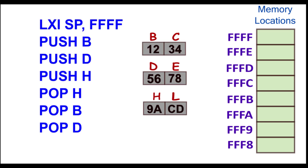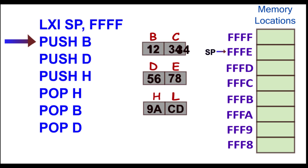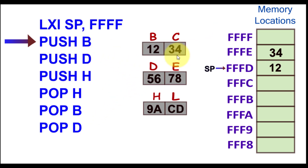With the first instruction LXI SP, the stack pointer gets initialized to FFFF. I'm showing this with an arrow marked SP. This is the first instruction which initializes the stack pointer. Next is PUSH B. When this instruction is executed, the stack pointer is first decremented and the contents of C are stored, then it decrements again and the contents of B are stored.